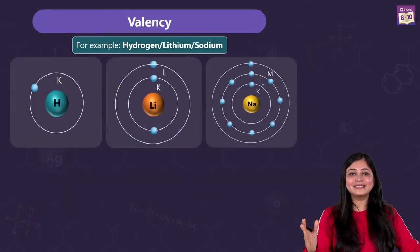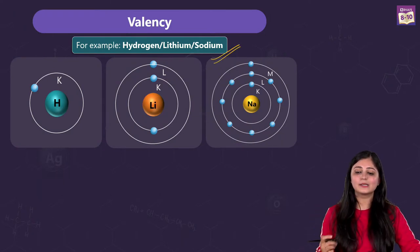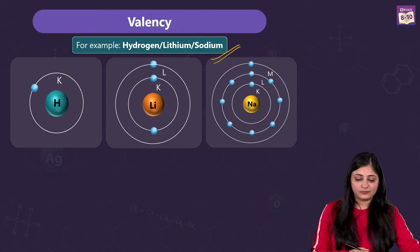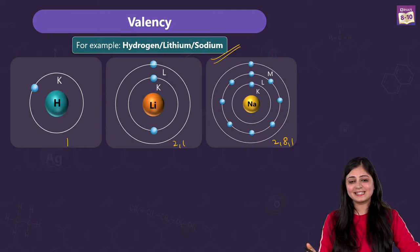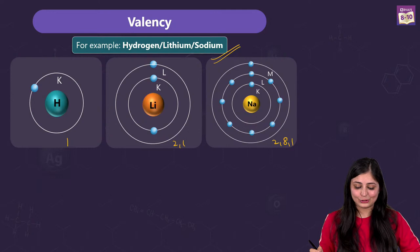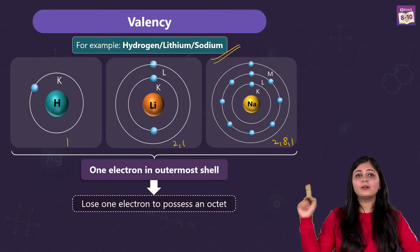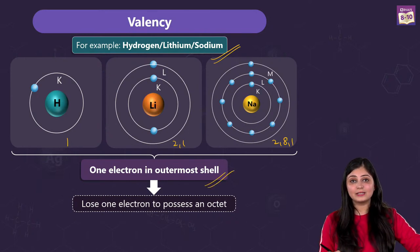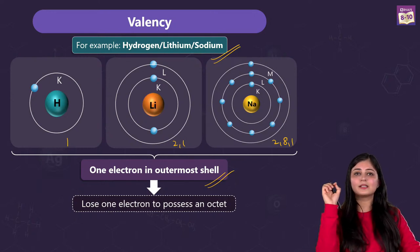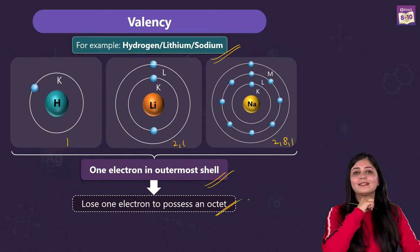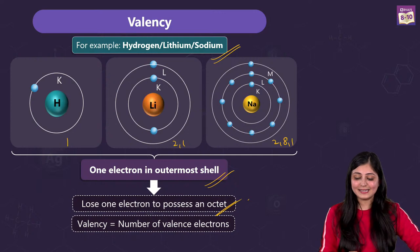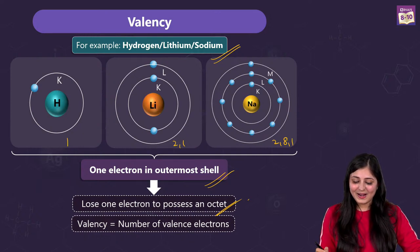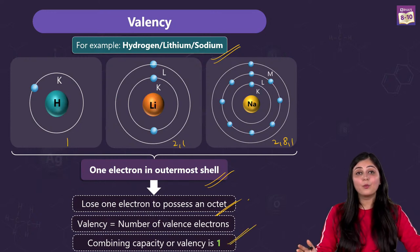Let's understand valency in the case of hydrogen, lithium, and sodium. Hydrogen is 1, lithium is 2,1, sodium is 2,8,1. In all these cases what is common? One electron in the outermost shell. It's very easy to lose one electron, and once that outermost electron is lost the atom becomes stable, completing its octet. That's why valency equals the number of valence electrons — one valence electron, valency is one. Combining capacity is one in this case.